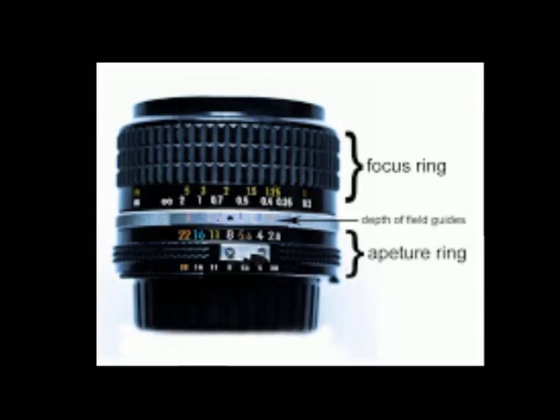They've started, in recent years, taking the depth of field guides off the lenses. Nowadays, a lot of the newer 35mm lenses no longer show this — which is kind of too bad because it's really helpful in some instances.